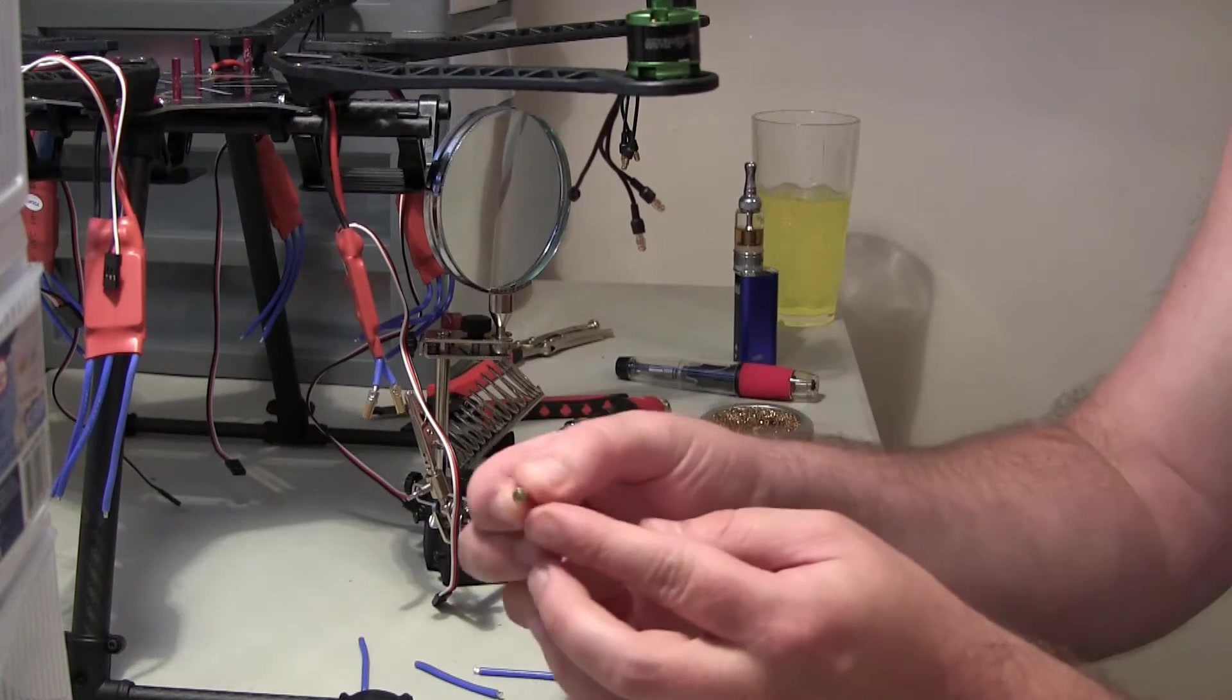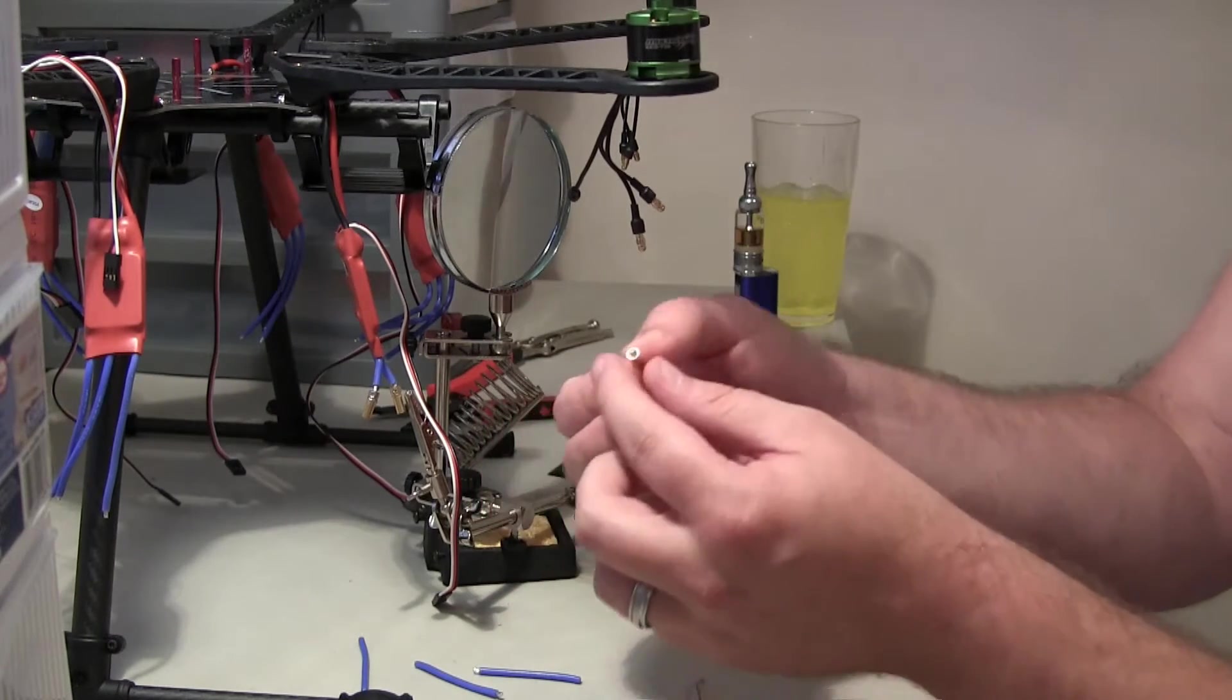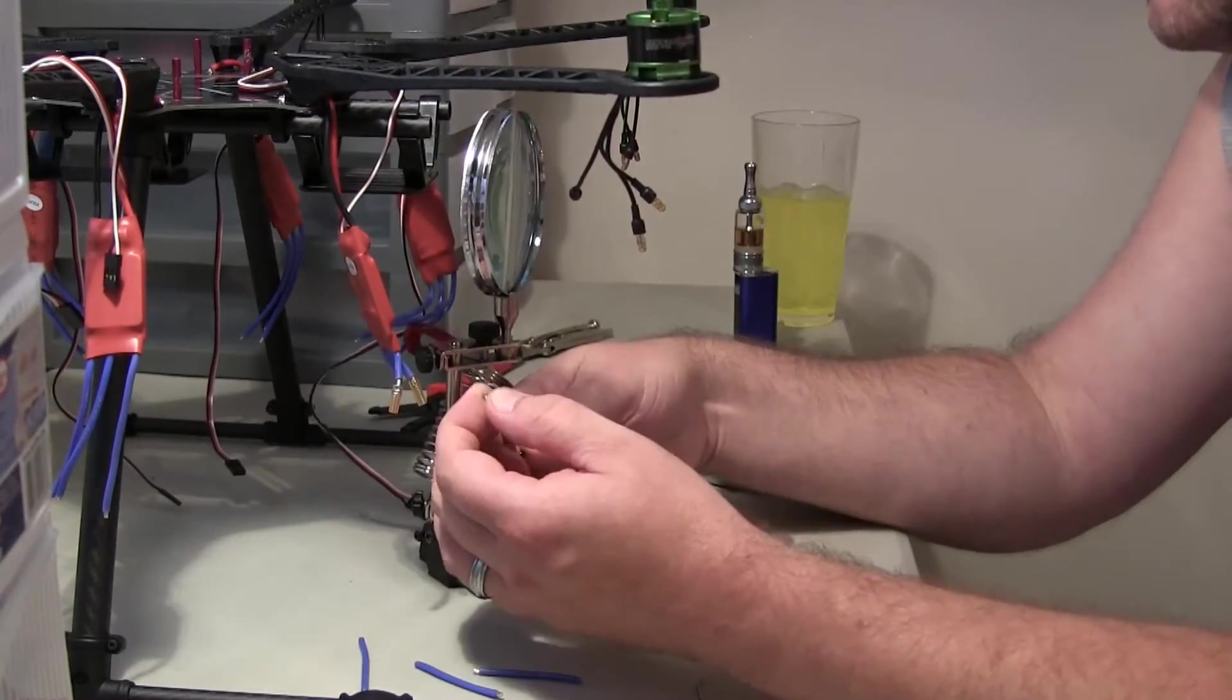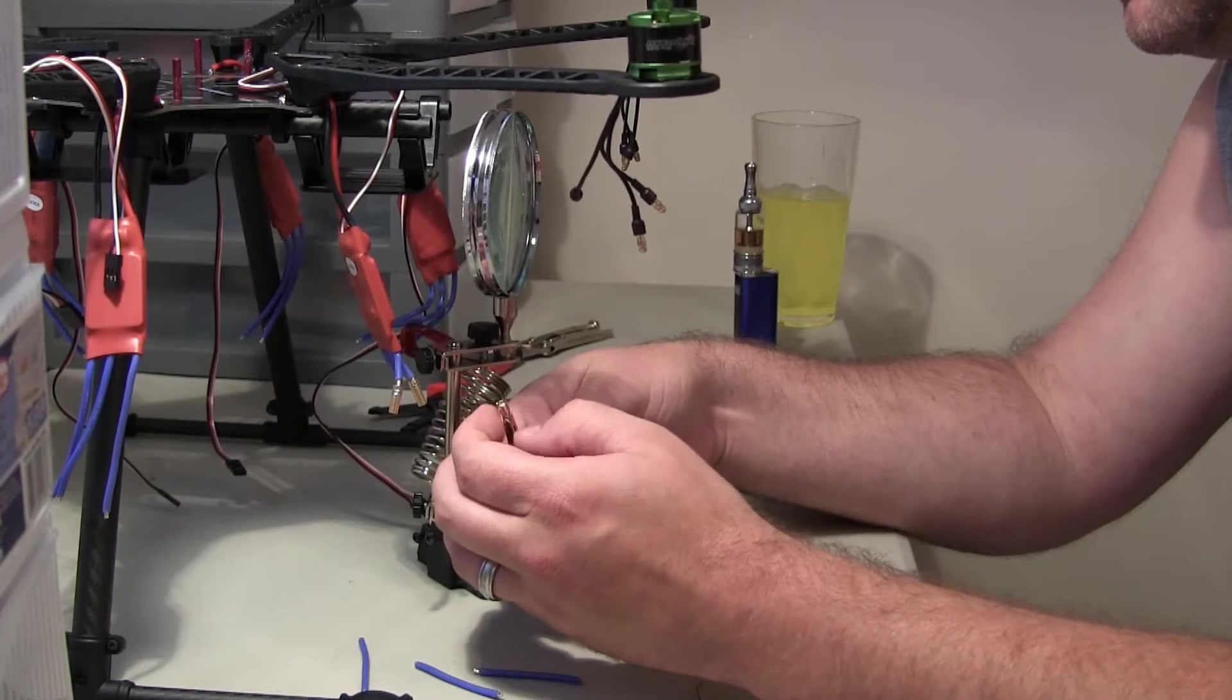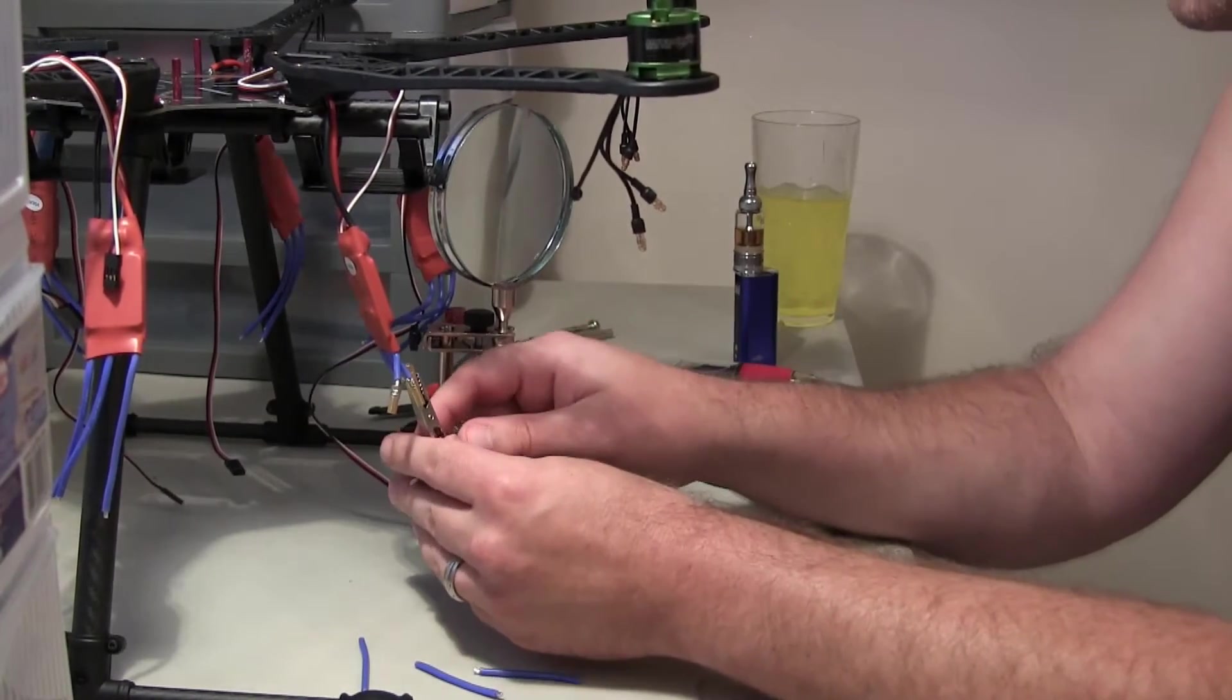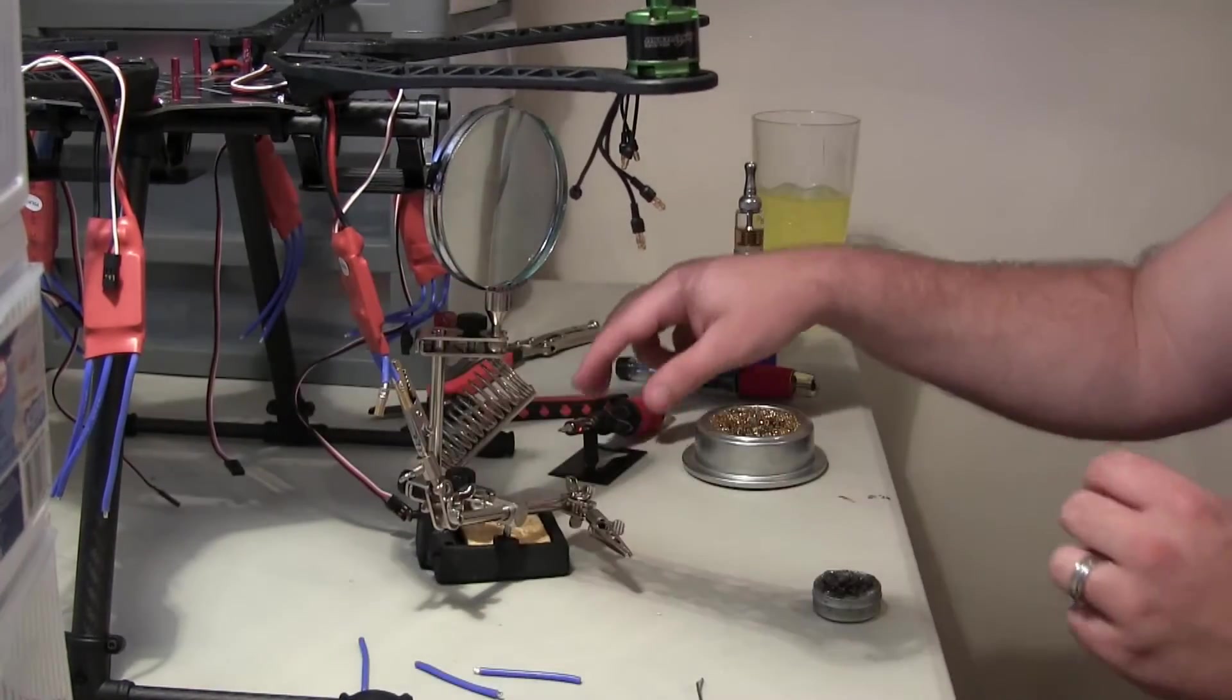And when we tinned them, you can see it's just filled with solder and it's not very deep at all. This is the last one. And we'll put some heat shrink over them. That'll work.